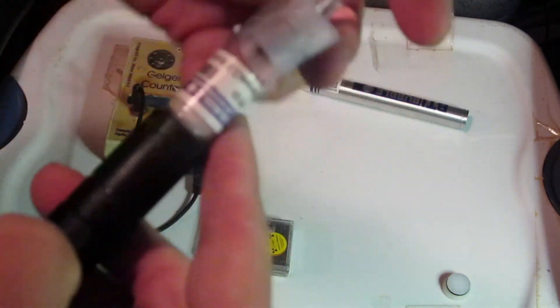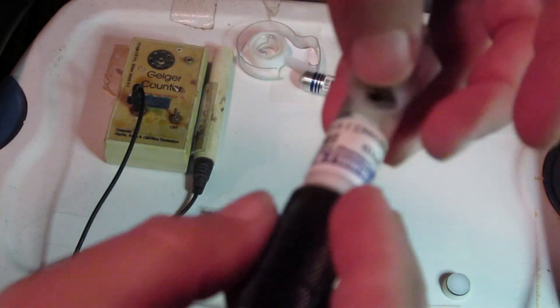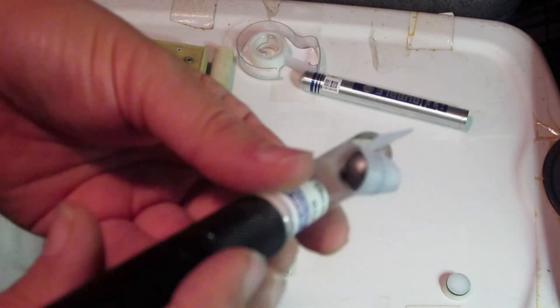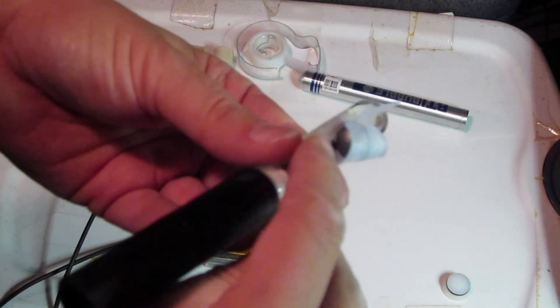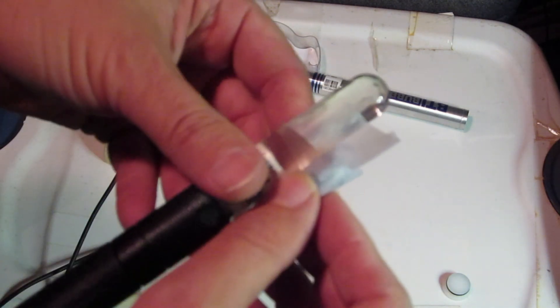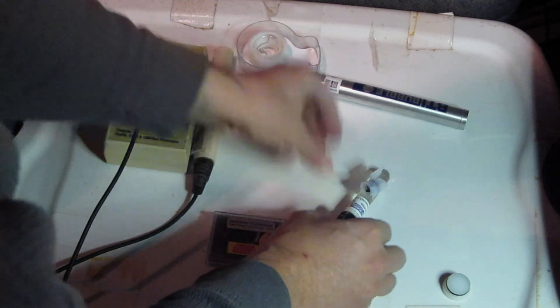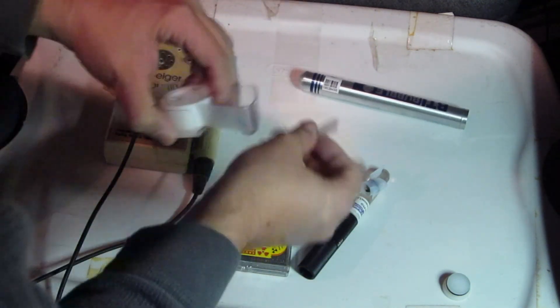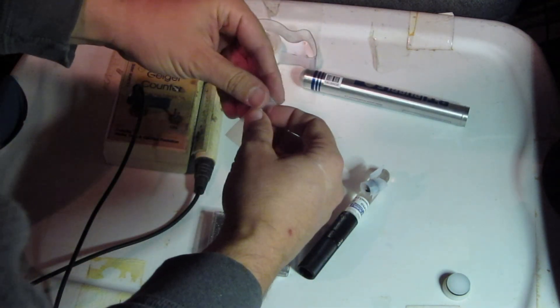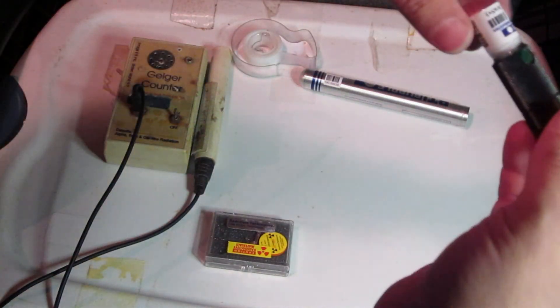So, get that on there a little bit better. So I have the beryllium, the americium pointing toward our neutron detector. Let me put a little bit more tape on this guy. Make sure it's taped down good.